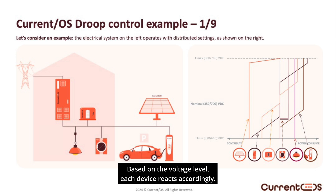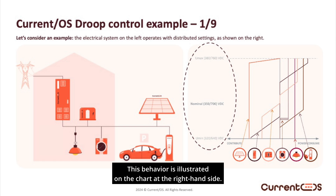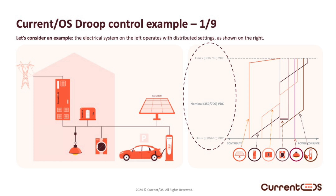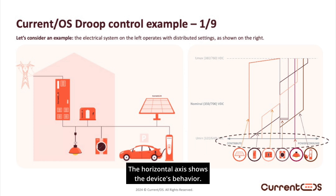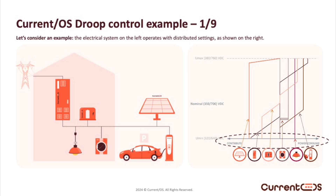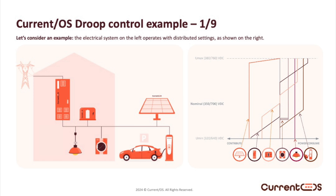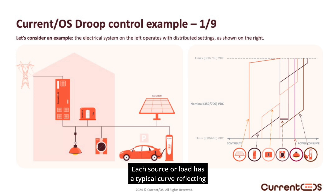Based on the voltage level, each device reacts accordingly. This behavior is illustrated on the chart at the right-hand side. The vertical axis represents voltage — high voltage at the top and low voltage at the bottom. The horizontal axis shows the device's behavior: on the left, the device contributes power; on the right, it consumes power. Each source or load has a typical curve reflecting its behavior.